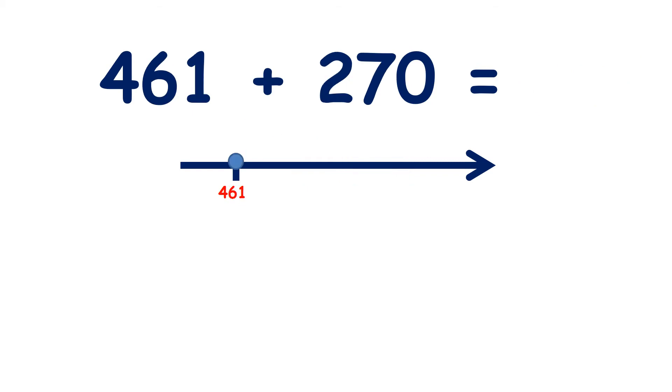Now pause the video and answer 461 plus 270. So we need to add 2 hundreds and 7 tens. If we have 4 hundreds and we add 2 hundreds, that gives us 6 hundreds, and of course we still have the 61 we started with. Now we need to add 70, so 7 tens.